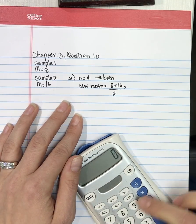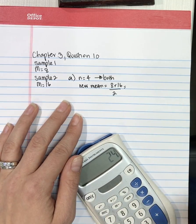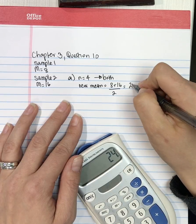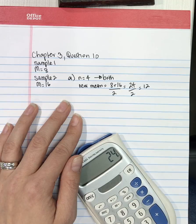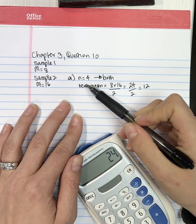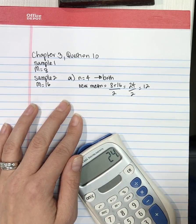8 plus 16 is 24, divide by 2 is 12. So the new mean, if both of the samples are of the same size and are 4, the new mean is 12.